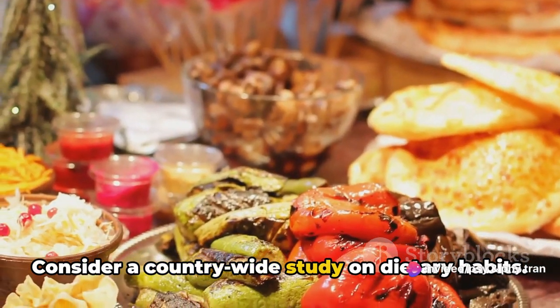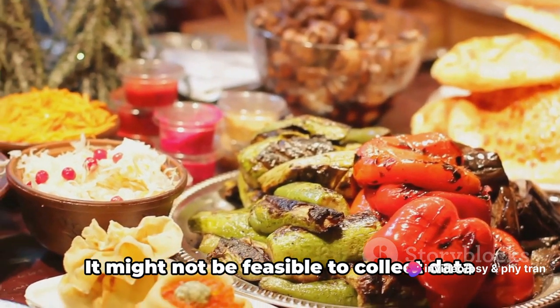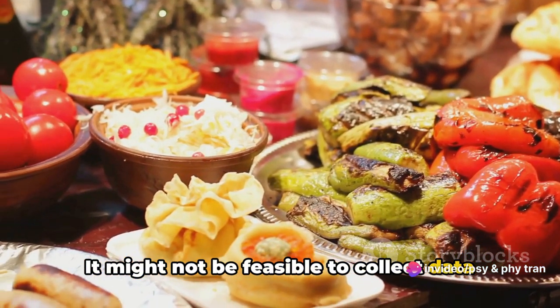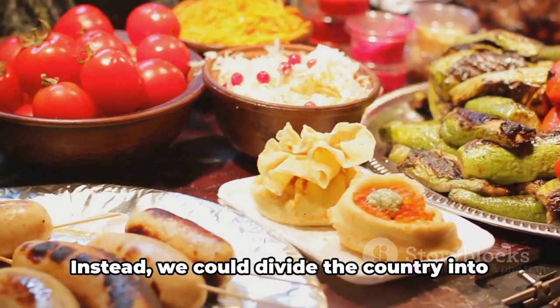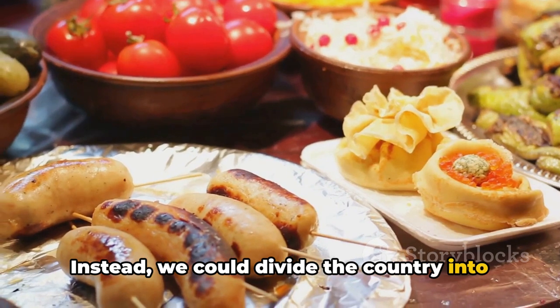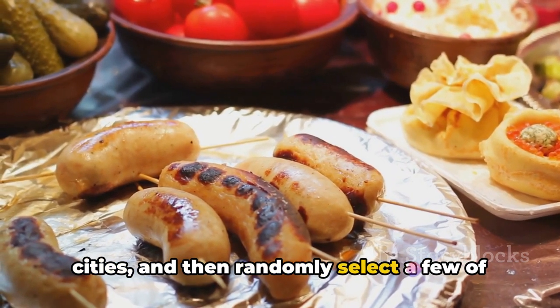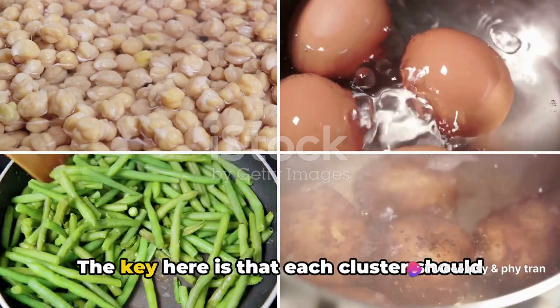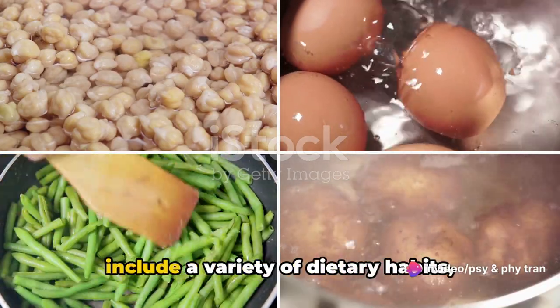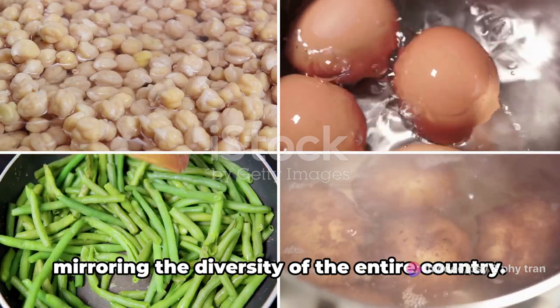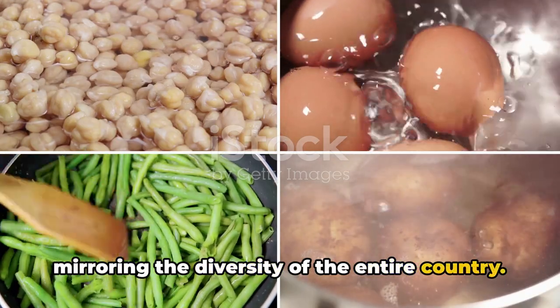Consider a country-wide study on dietary habits. It might not be feasible to collect data from individuals across the country. Instead we could divide the country into clusters, perhaps by neighborhoods or cities, and then randomly select a few of these clusters to study. The key here is that each cluster should include a variety of dietary habits, mirroring the diversity of the entire country.